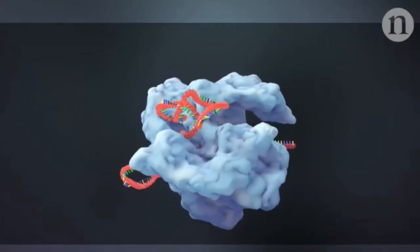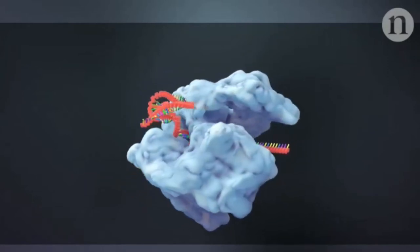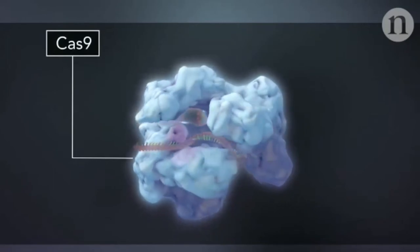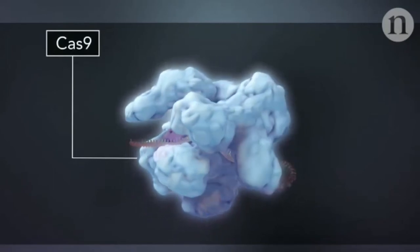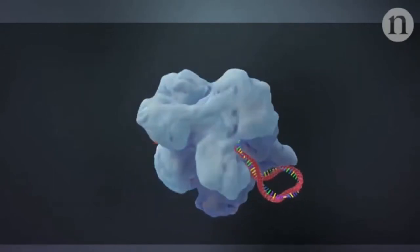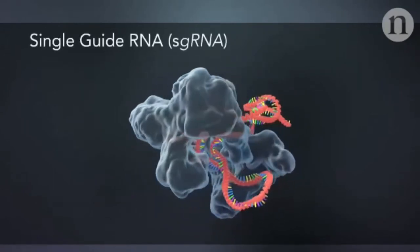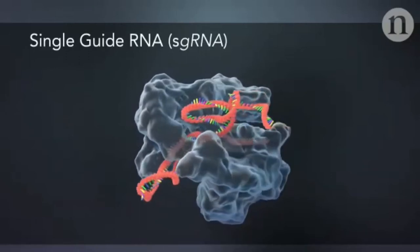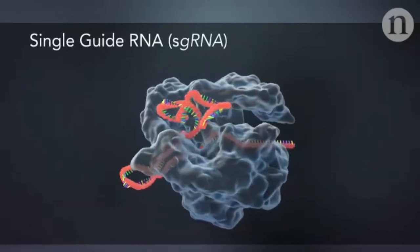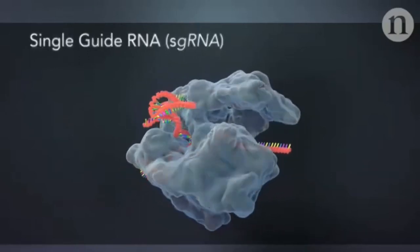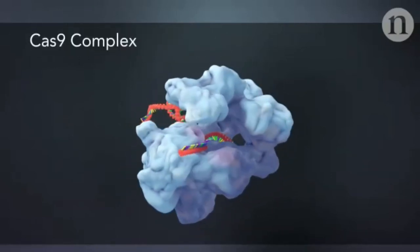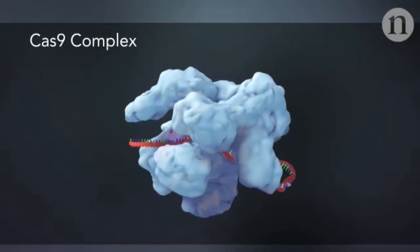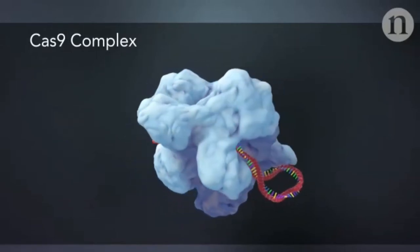There are two components to the system: a DNA-cutting protein called Cas9, and an RNA molecule known as the guide RNA. Bound together, they form a complex that can identify and cut specific sections of DNA.